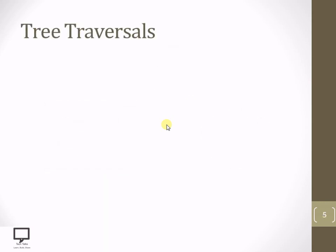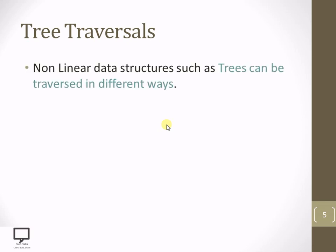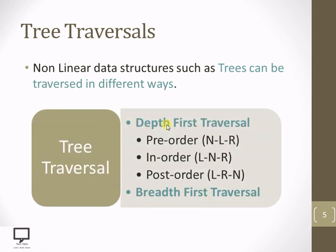Now let's see what tree traversal is. Tree traversal is one way in which we can display a tree data structure. A tree is a non-linear data structure, and to display it there are different ways. Displaying the tree is also called traversing the tree data structure.